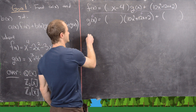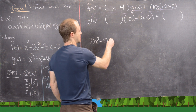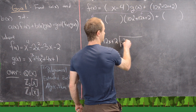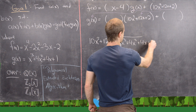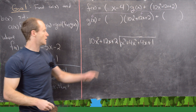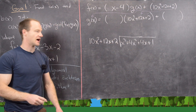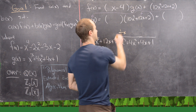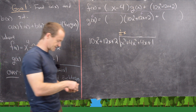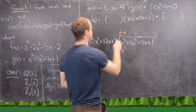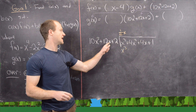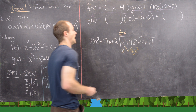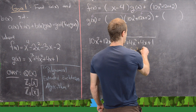We divide 10x² + 12x + 2 into g(x) = x³ + 4x² + 4x + 1. What do we multiply by 10x² to get x³? That's (1/10)x. Distributing gives x³ + (6/5)x² + (1/5)x. Grouping and subtracting: the x³ terms cancel, leaving 4x² − (6/5)x² = (14/5)x², and 4x − (1/5)x = (19/5)x, then bring down the 1.